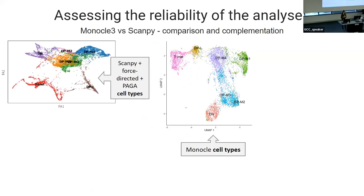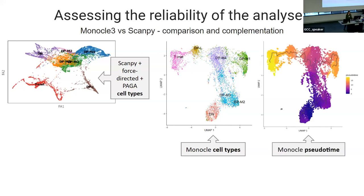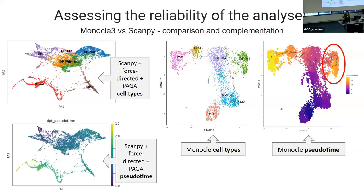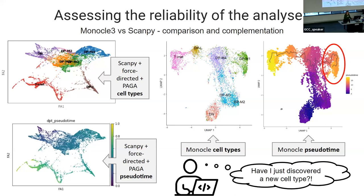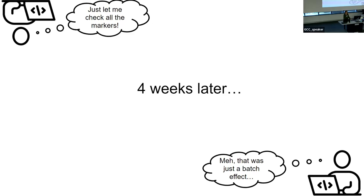I want to show you an example from real life of how important it is to have different methods to assess the reliability of the analysis. Here you can see cell types plotted using ScanPy and Monocle, from the development of T cells. This graph shows the pseudo time calculated by Monocle, and I want to draw your attention to this cluster that branches out from the main trajectory. This wasn't seen in pseudo time calculated by ScanPy, so that made me think: is this branch an artifact or have I discovered a new cell type?